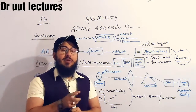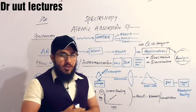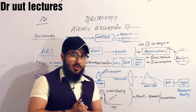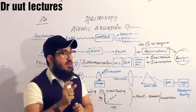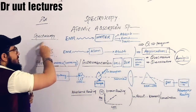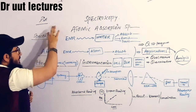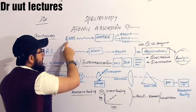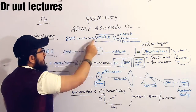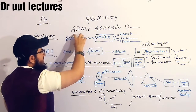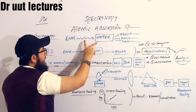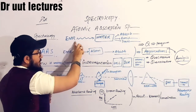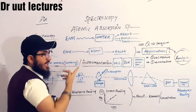In today's lecture we will talk about Atomic Absorption Spectroscopy. Before we move towards that topic, we must have a short concept of spectroscopy. What is spectroscopy? Spectroscopy is actually the interaction of electromagnetic radiation with matter. When electromagnetic radiation interacts with matter, it is known as spectroscopy. This interaction between electromagnetic radiation and matter is of different types.